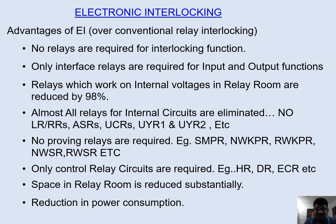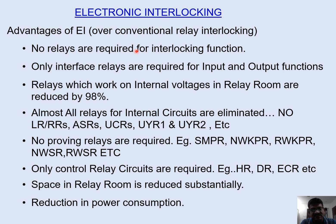Coming to the basic advantages of EI — what are the advantages when we compare it with conventional relay interlocking? No relays are required for interlocking function. Previously we used many relays such as ASRs, UIRs, SR, SR2, and TSRs for interlocking purposes. All these relays are no longer required — they are all done in digital. Only interface relays are required for input and output functions.